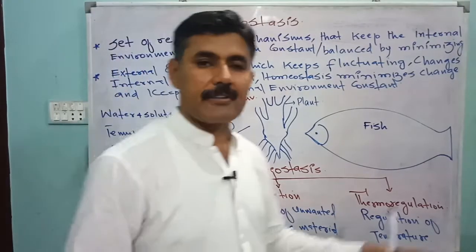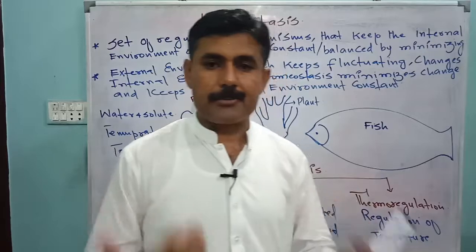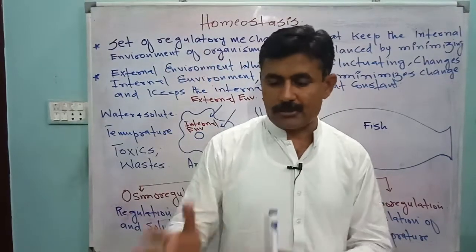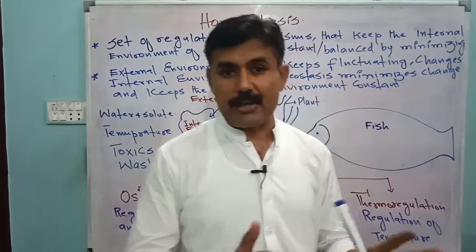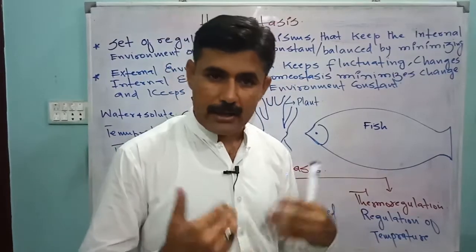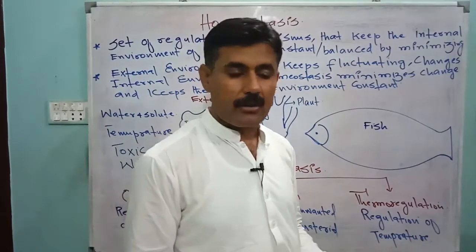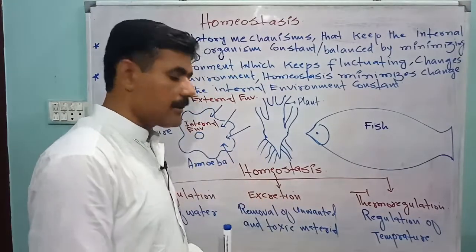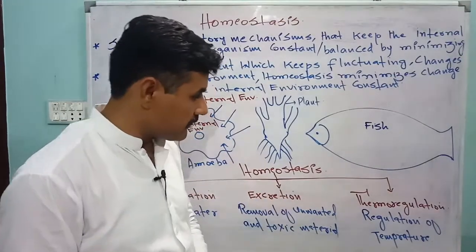For example, in humans, the skin helps in excretion, the liver helps in excretion, and especially the urinary system — the kidney — helps in excretion. They help to remove nitrogenous wastes out of our body to keep the blood and internal environment constant always.